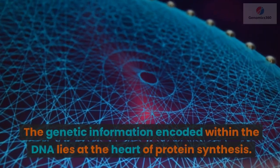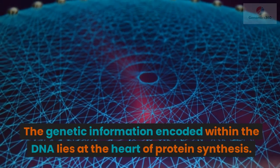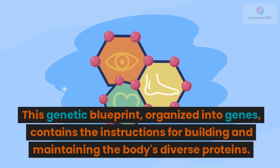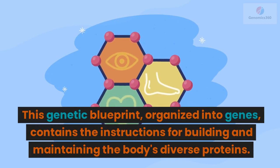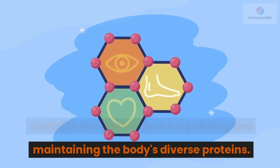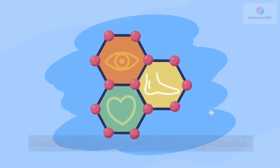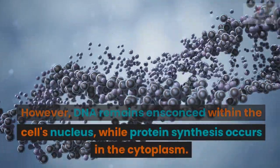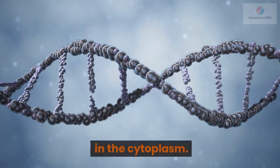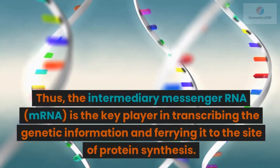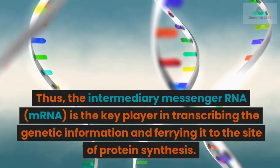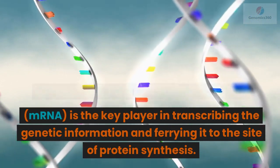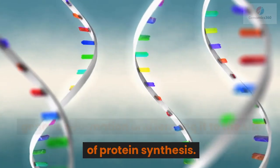The genetic information encoded within the DNA lies at the heart of protein synthesis. This genetic blueprint, organized into genes, contains the instructions for building and maintaining the body's diverse proteins. However, DNA remains ensconced within the cell's nucleus, while protein synthesis occurs in the cytoplasm. Thus, the intermediary messenger RNA, mRNA, is the key player in transcribing the genetic information and ferrying it to the site of protein synthesis.